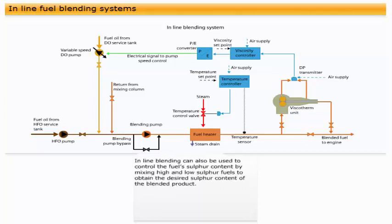In-line blending can also be used to control the fuel's sulphur content by mixing high and low sulphur fuels to obtain the desired sulphur content of the blended product.